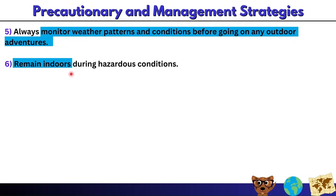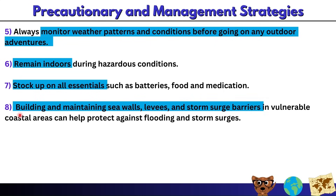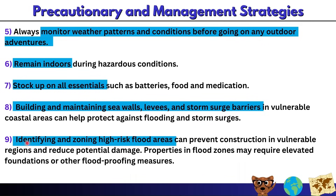Strategy 6: remain indoors during hazardous conditions — if you see large grey clouds or heavy winds, please stay inside. Strategy 7: stock up on all essentials such as batteries, food, and medication. Strategy 8: building and maintaining sea walls, levees, and storm surge barriers in vulnerable coastal areas can help protect against flooding and storm surges. Strategy 9: identifying and zoning high-risk flood areas can prevent construction in vulnerable regions, and properties in flood zones may require elevated foundations or other flood-proofing measures.